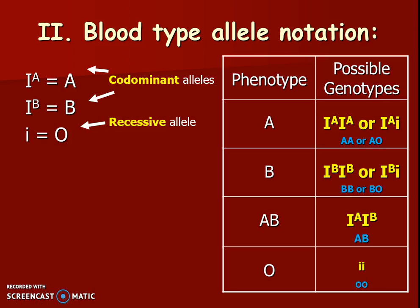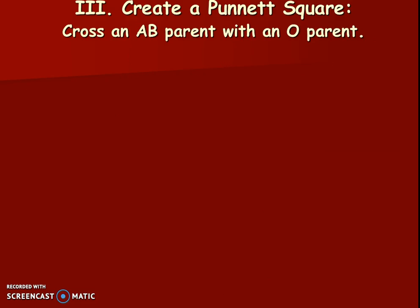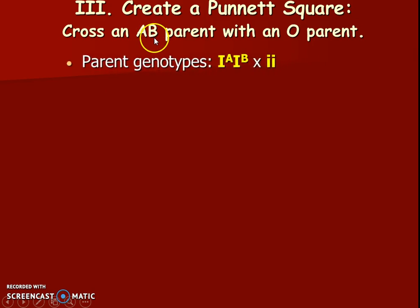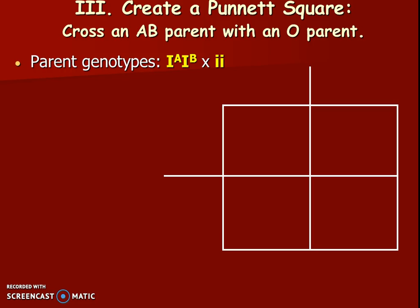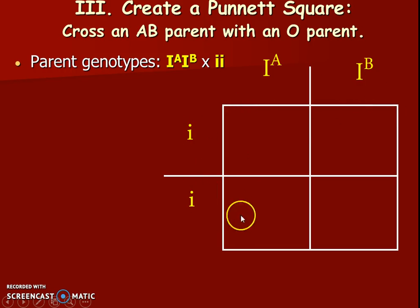This makes blood type genetic problems challenging, and we'll practice a lot together in class. Here's one practice problem: cross an AB parent with an O parent. Our first step is to write out the parent genotypes properly. AB is I-raised-A / I-raised-B, and O is little i / little i. Then we do a Punnett square, placing the letters where they go. It doesn't matter which parent goes on which side, as long as the two alleles for each parent are across the two columns or rows.